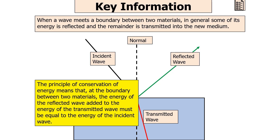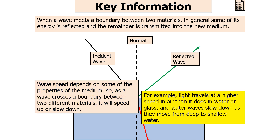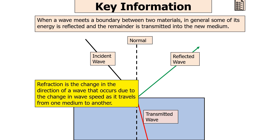The wave speed depends on properties of the medium, so as a wave crosses a boundary between two different materials it will speed up or slow down. For example, light travels at a higher speed in air than in water or glass, and water waves slow down as they move from deep to shallow water. Refraction is the change in direction of a wave that occurs due to the change in wave speed as it travels from one medium to another.